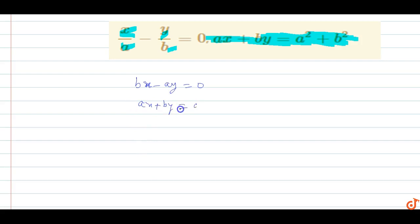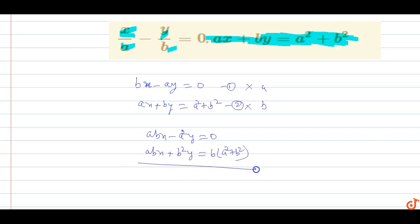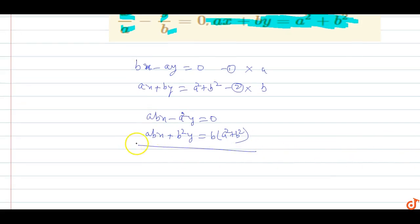Now we make the coefficients of x equal. We multiply equation 1 by a and equation 2 by b. Equation 1 becomes abx minus a²y equals 0, and equation 2 becomes abx plus b²y equals b(a² plus b²).